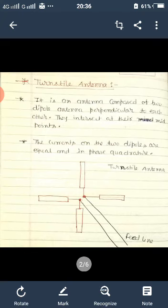It is an antenna composed of two dipole antennas perpendicular to each other. They intersect at their midpoint. The current on the two dipoles are equal and in phase quadrature.